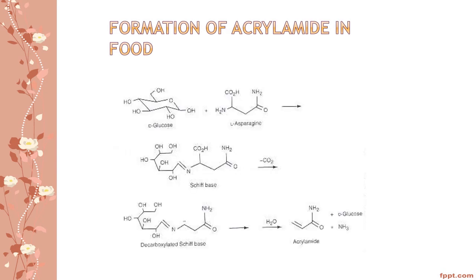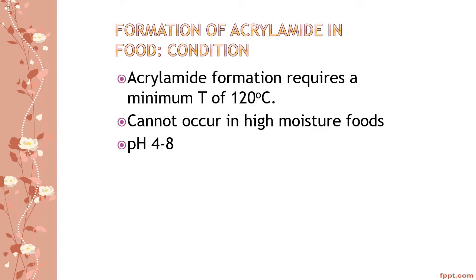This is how acrylamide basically forms in food. Glucose and L-asparagine react to give a Schiff base, which undergoes decarboxylation to give a decarboxylated Schiff base. When reacted with water, it decomposes into acrylamide plus glucose and ammonia. Conditions needed for acrylamide formation include a minimum temperature of 120 degrees Celsius; it cannot occur in high moisture foods, and normally requires a pH of 4 to 8.